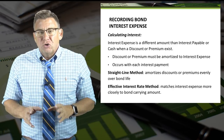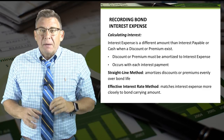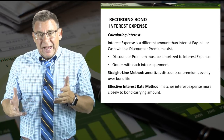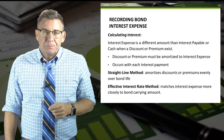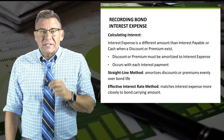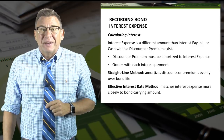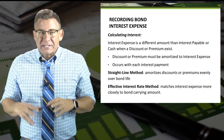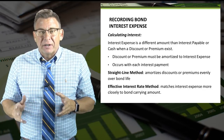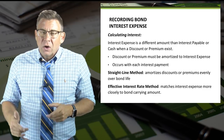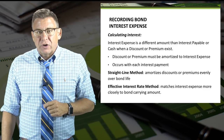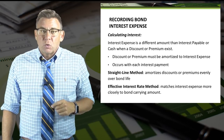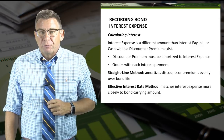When companies issue bonds at premiums or discounts, the amount of interest expense and the amount of interest payable — or cash — are going to be different. This is due to the premium or discount amortization that occurs each time an interest payment is made. The straight-line method amortizes premiums and discounts evenly over the life of the bond, whereas the effective interest rate method matches interest expense more closely to the bond carrying value. This is why it is the method approved by GAAP.